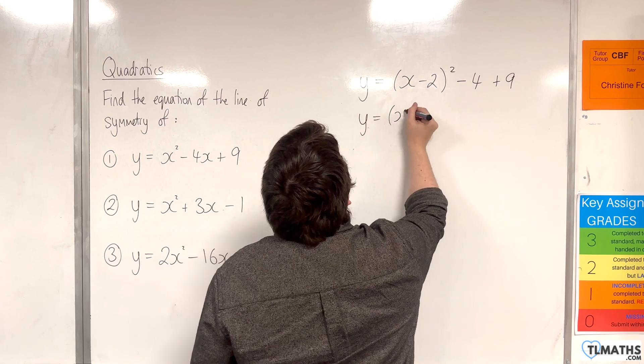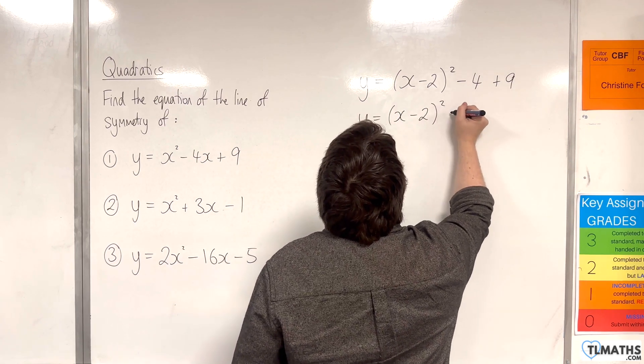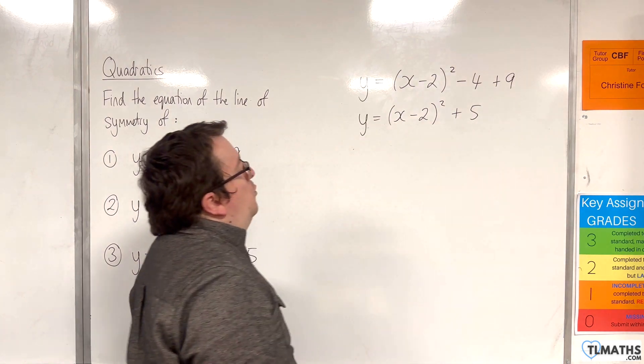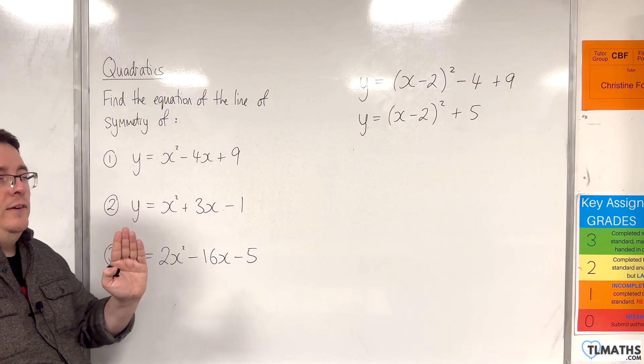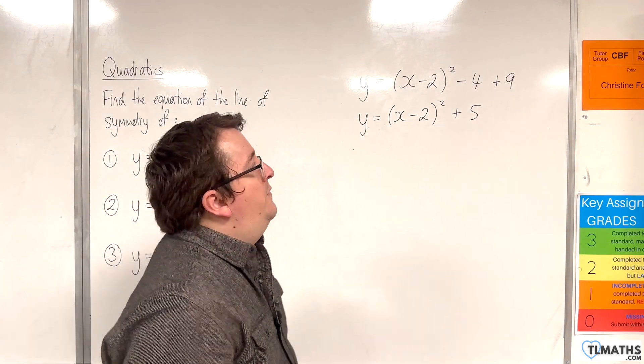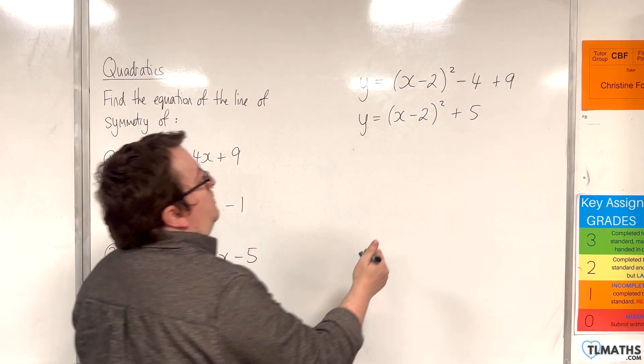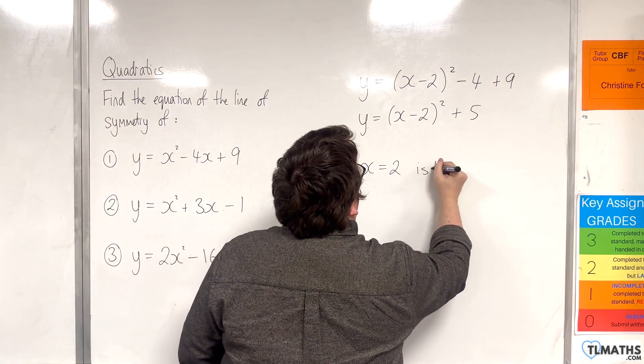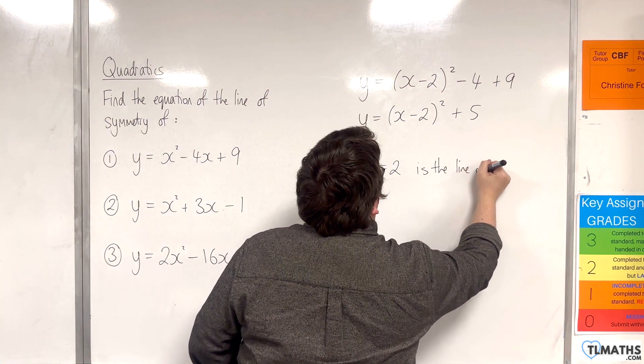So y equals x take away 2 squared, and we've got minus 4 plus 9, so plus 5. So we can read off the vertex as being at 2, 5. So if the vertex is at 2, 5, x equals 2 is the line of symmetry.